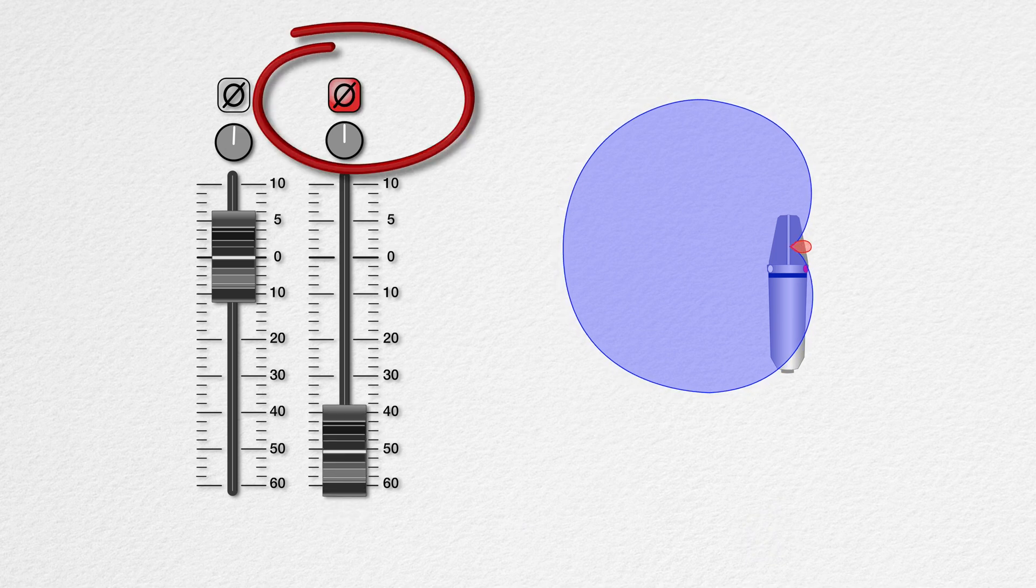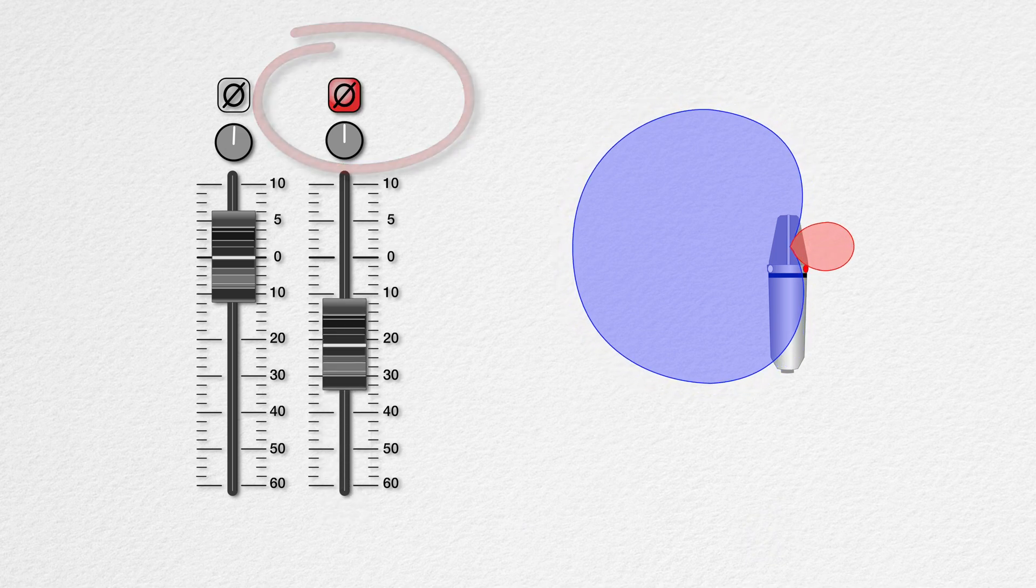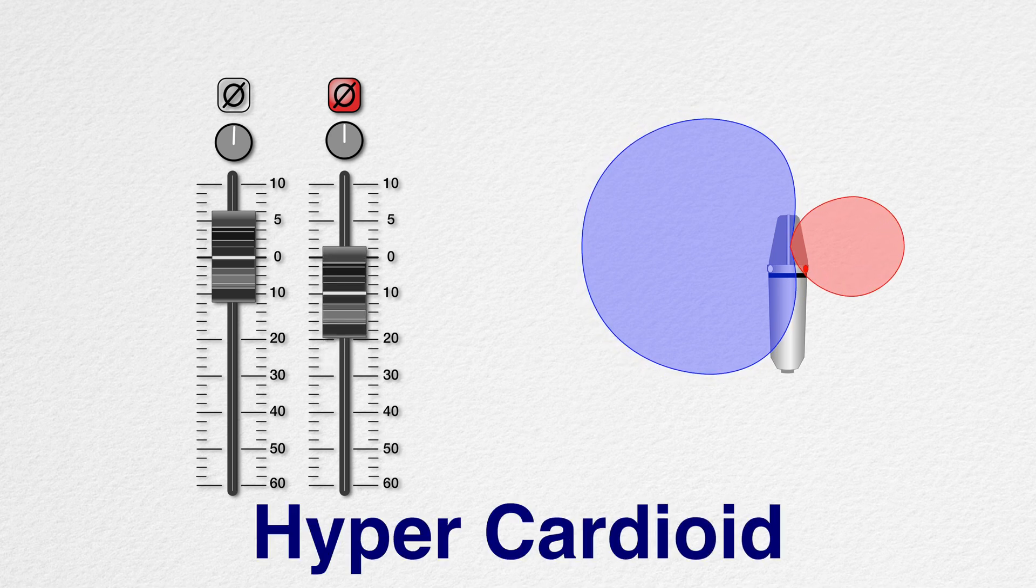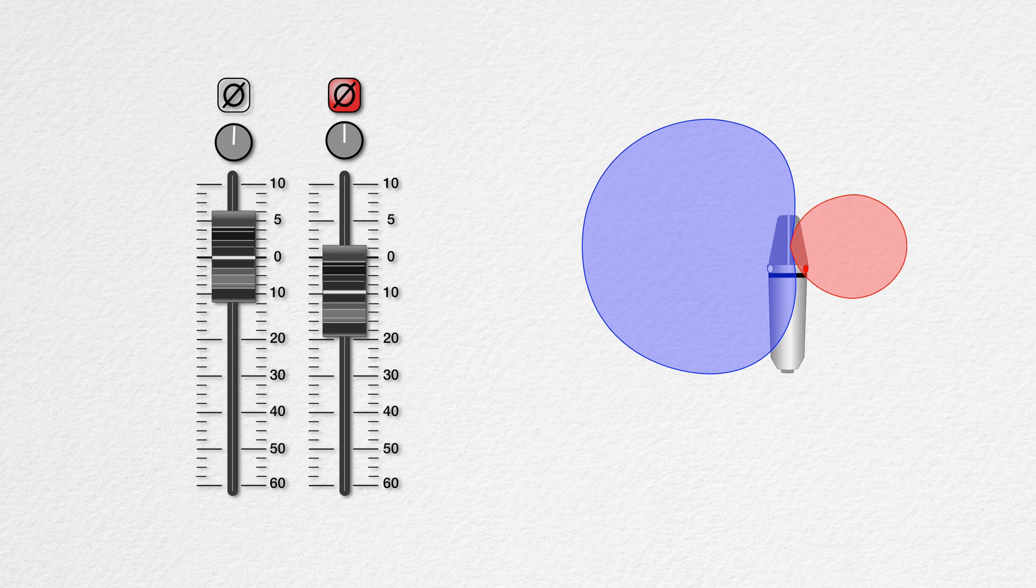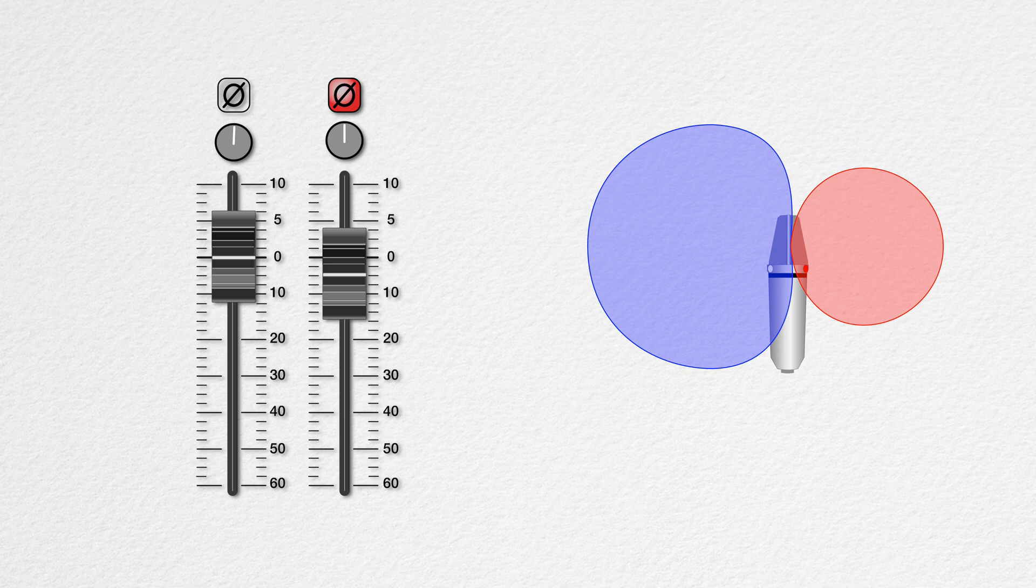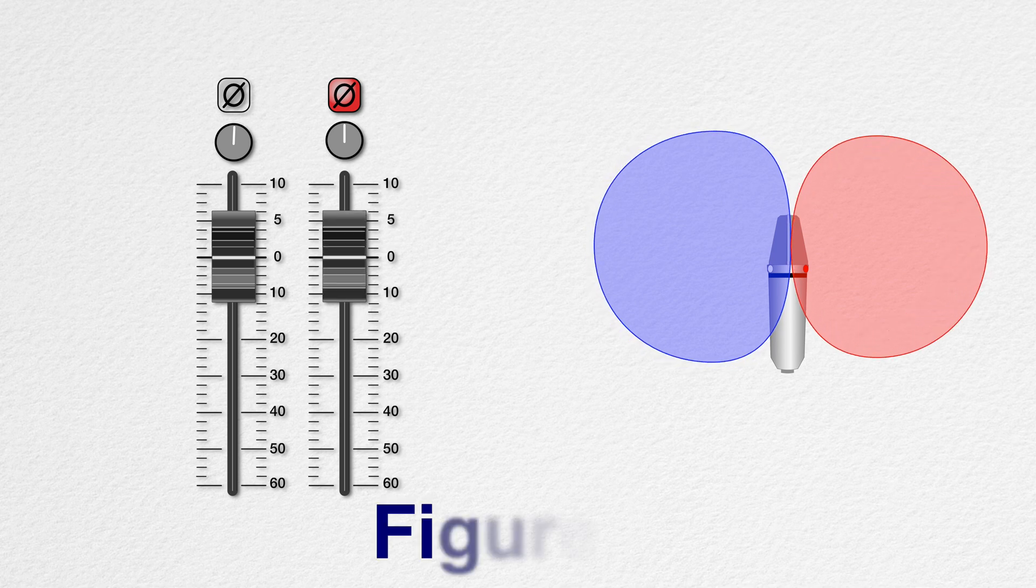Now for the other ones. First step, reverse the phase, raise the level of the rear signal. Hypercardioid is about 10 dB down on the rear, and supercardioid is about 4 dB down. For figure 8, equal levels.